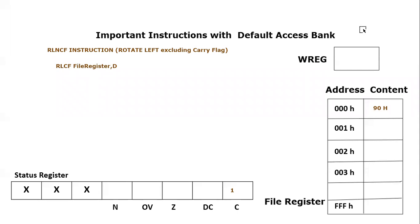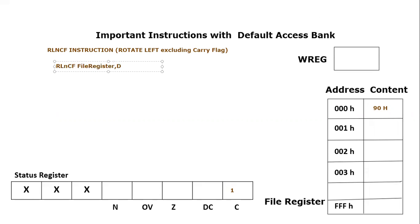Bismillahirrahmanirrahim, Assalamualaikum everyone. In this video tutorial we are going to consider another instruction which is RLNCF, that means rotating left but not through carry flag — which means we are excluding the carry flag. It will be similar to what we have done in rotate left through carry flag, but we will not consider the value of the carry flag. Let's take an example to further explore this instruction.